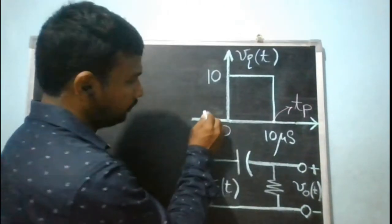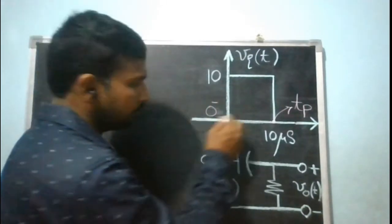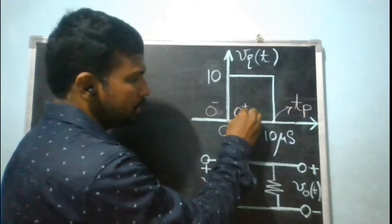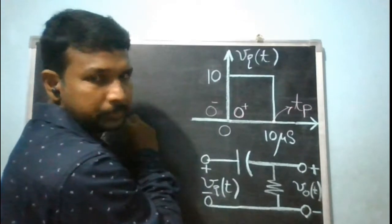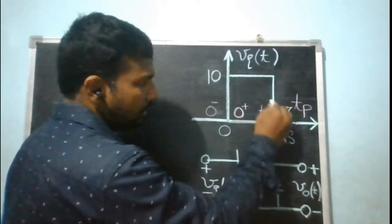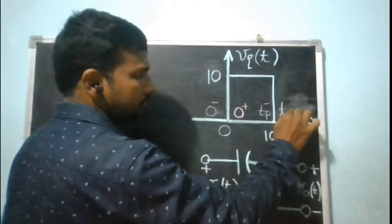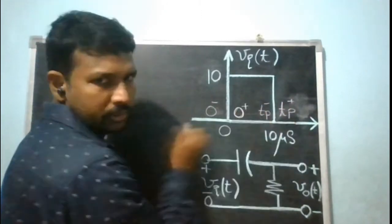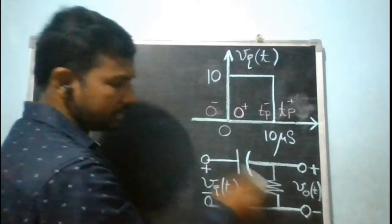At 0 minus, my input is 0. At 0 plus, my input is plus 10 volts. At tp minus, my input is plus 10 volts. At tp plus, my input is 0. So with this input structure, let us try to find out what the output voltage is.